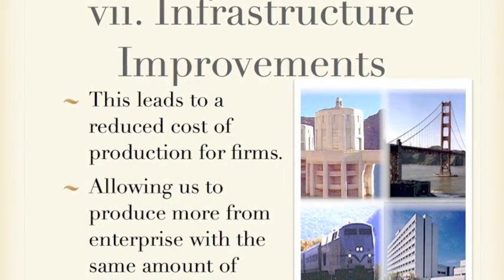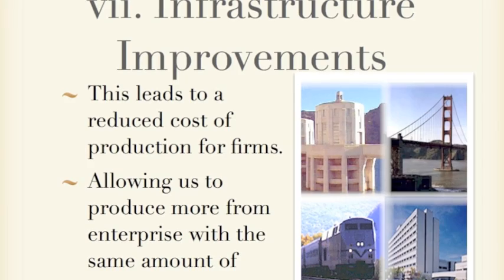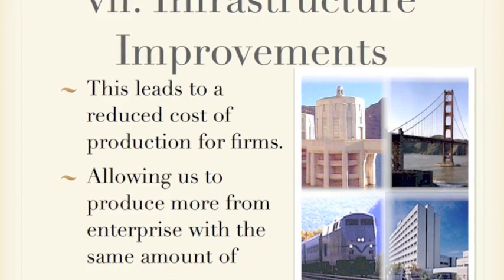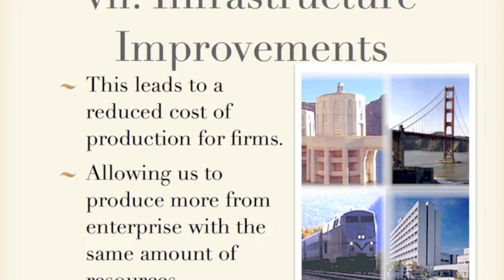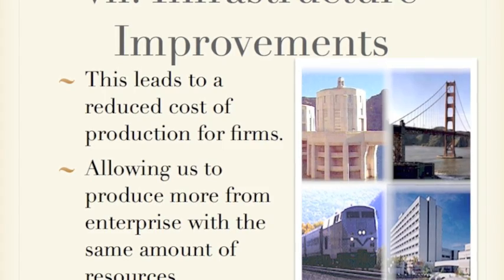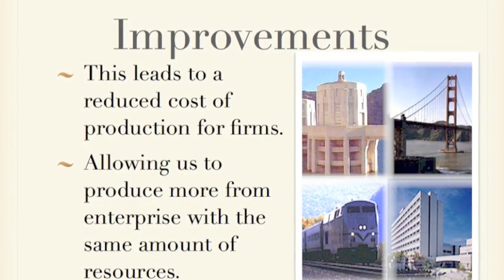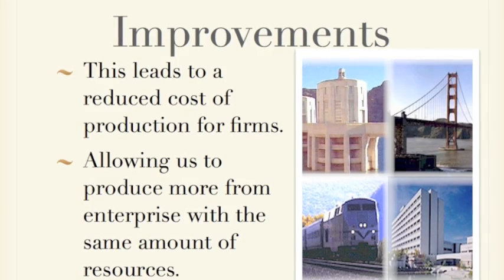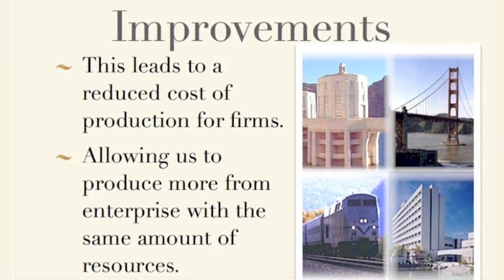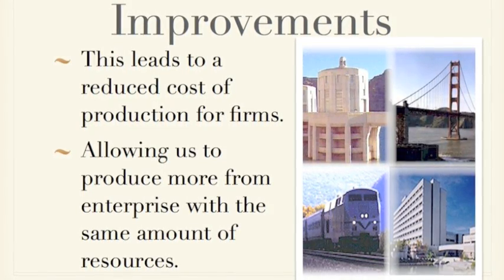The second interventionist supply side policy is spending on infrastructure improvements. If the government spends on wiring, water, transport, and similar infrastructure, then firms don't have to pay as much to make these basic inputs happen at a good level. This reduces the cost of production, giving firms more money to reinvest into research and development, and allows us to get more out of the resource of enterprise without actually increasing enterprise. The problems are that it is quite expensive, there are large time lags, there is an opportunity cost, and there are inflationary pressures.